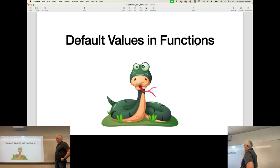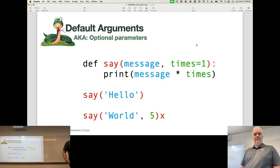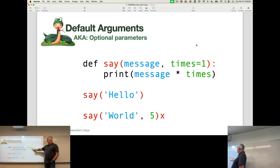Now, this is one of those things that you want to store in your memory banks. A default value in a function allows you to create a parameter that is optional because you give it a default value.